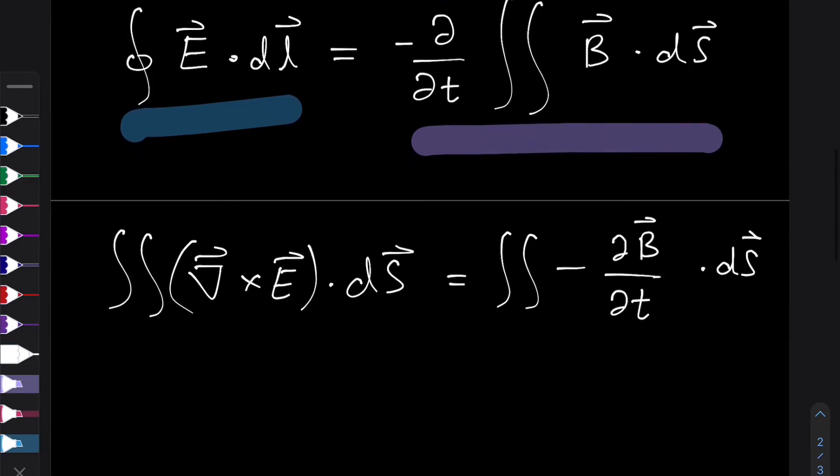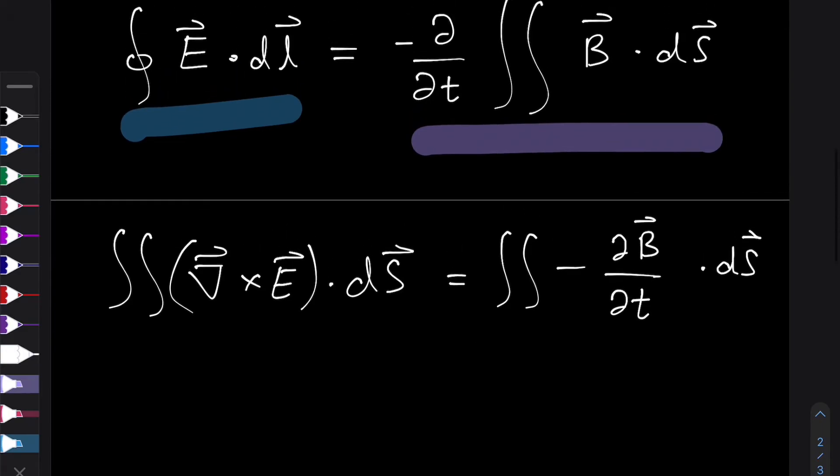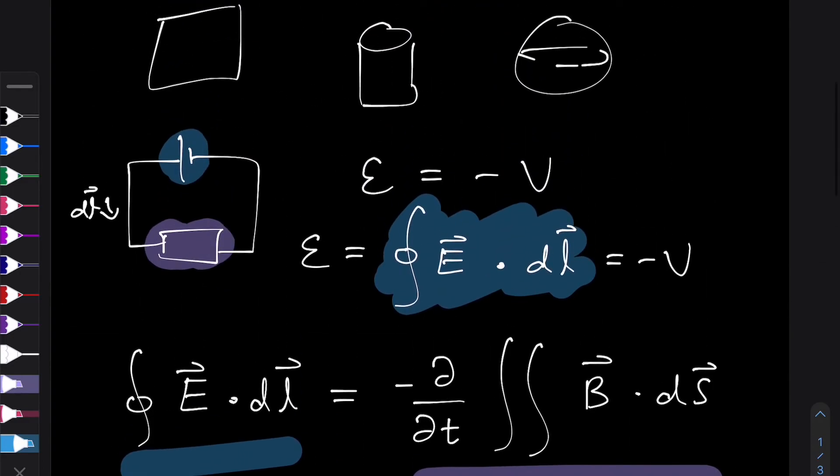So now we have these two integrals. If you think about it, both of these integrals are describing the same area, because this over here is the area enclosed by our circuit, the loop you're integrating over. And we were looking at the flux change through the area of the circuit itself. So both of these integrals were referring to this particular area.